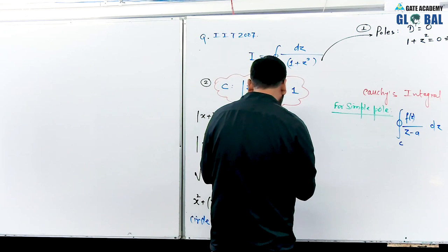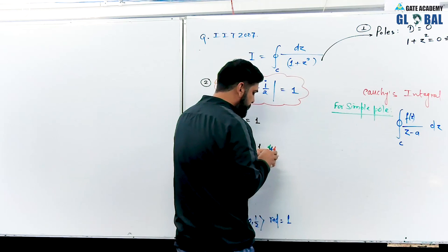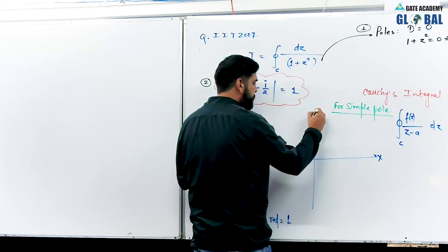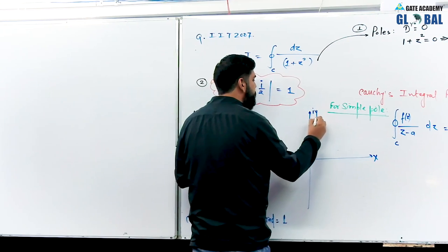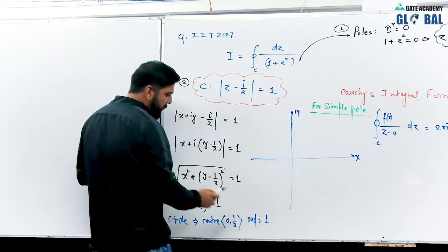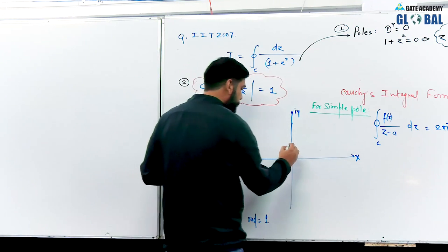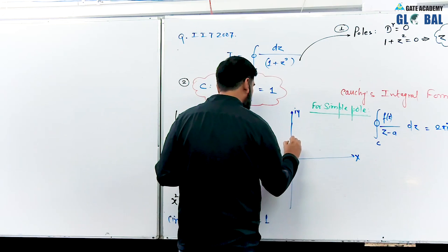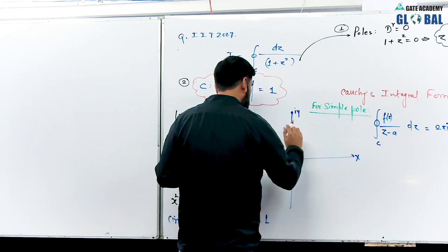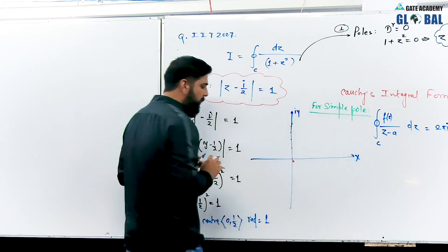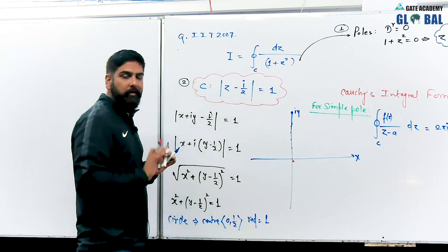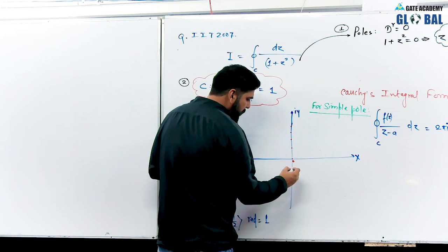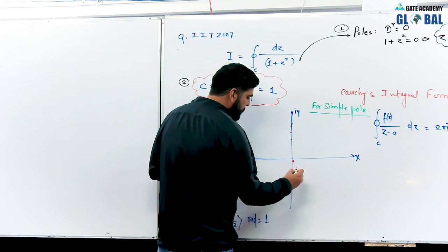I am drawing the circle with red color. I have the x-axis and the imaginary y-axis. The center 0 comma i by 2 is here — let us say this is i by 2, this is i, this is 3i by 2, and this is 2i. The center y-value is 1 by 2, and the radius is 1. So the circle extends from minus i by 2 up to 3i by 2 in the imaginary direction.